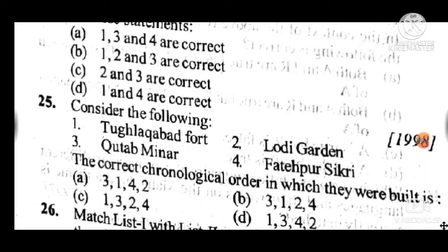Question 25: The correct chronological order is B — 3, 1, 2, 4: Qutb Minar was constructed first, then Tughlaqabad, then Lodhi Garden, then Fatehpur Sikri.